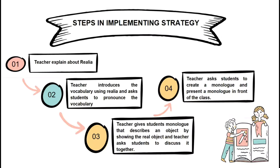The second step is the teacher introduces the vocabulary using Realia and asks the students to pronounce the vocabulary. After that, the teacher gives students a monologue that describes an object by showing the real object, and asks the students to discuss it together.